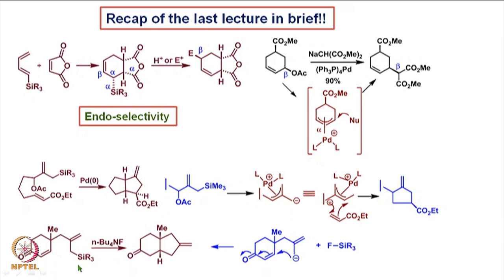Finally, we also looked at the intramolecular cyclization of an allylsilane under basic conditions, in which tetrabutylammonium fluoride was taken as a nucleophile which interacts with the silicon making a strong silicon-fluorine bond and generating an anion which then allows cyclization to occur. The driving force is the formation of the strong silicon-fluorine bond. These are the things we discussed governing the allylsilane based chemistry.